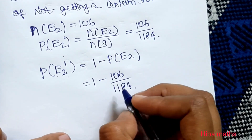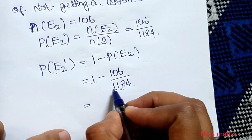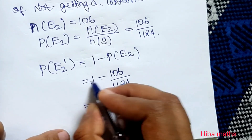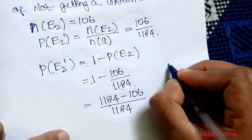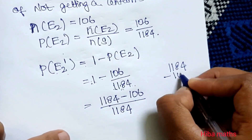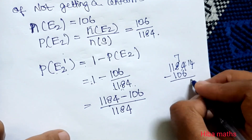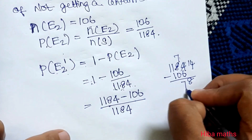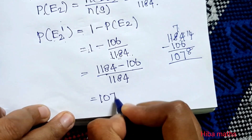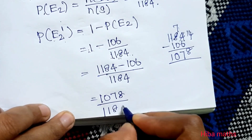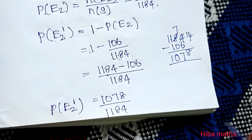The probability of not getting a Centum Scorer in Science is P(E2') = 1 minus P(E2), which equals 1 minus 106/1184. Computing: 1184 minus 106 equals 1078, so P(E2') = 1078/1184. This is the value of P(E2 dash).